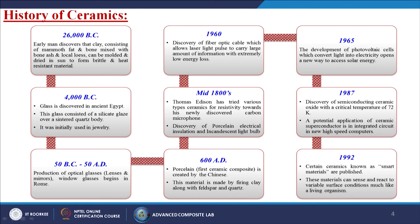In 1960, fibre optic cable was discovered, allowing laser light pulses to carry large amounts of information with extremely low energy loss. In 1965, the development of photovoltaic cells — which convert light into electricity — opened a new way to access solar energy. In 1987, semi-conducting ceramic oxide with a critical temperature of 72 Kelvin was discovered, with potential application in integrated circuits in high-speed computers. In 1992, certain ceramics known as smart materials were published; these can sense and react to variable surface conditions much like a living organism.